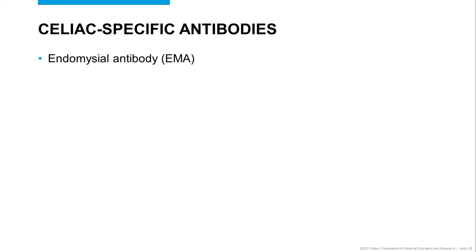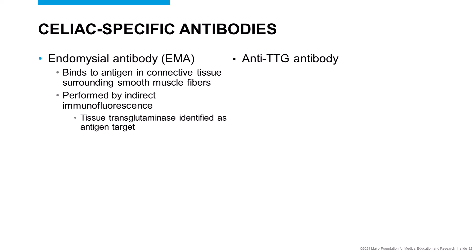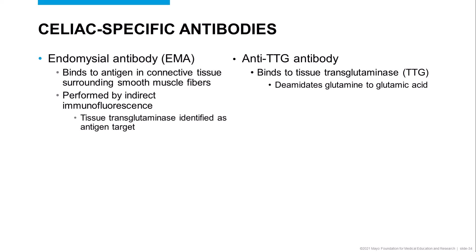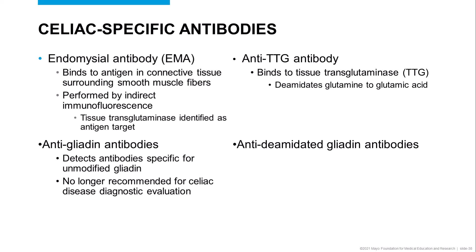Endomesial antibodies, or EMAs, are so named because they were originally identified as binding to the endomesium, which is the connective tissue that surrounds smooth muscle fibers. This testing is still performed by indirect immunofluorescence using a smooth muscle substrate. Ultimately, it was demonstrated that EMAs were binding specifically to tissue transglutaminase. Anti-TTG antibodies is the nomenclature for antibodies detected by binding specifically to tissue transglutaminase, which is an enzyme responsible for deamidating glutamine residues to glutamic acid. Patients with celiac disease may also develop antibodies against gliadin, which are peptides produced from digestion of gluten. The first immunoassays developed tested for antibodies against unmodified gliadin; however, these assays were inferior to the TTG antibody and EMA assays and are no longer recommended. Currently, the preferred gliadin antibody assays use deamidated gliadin.